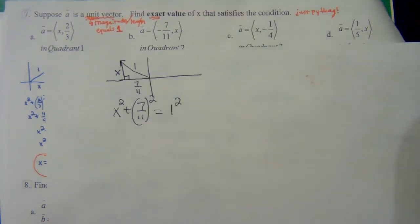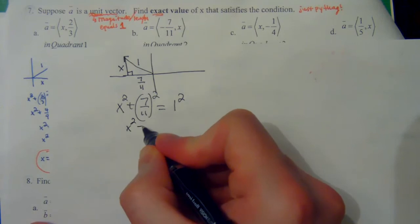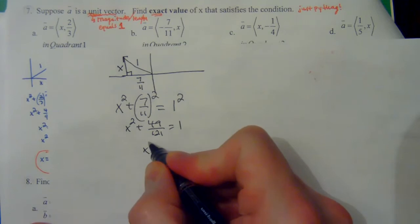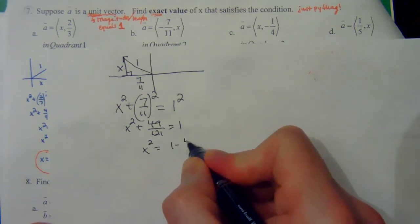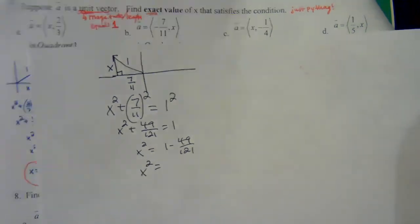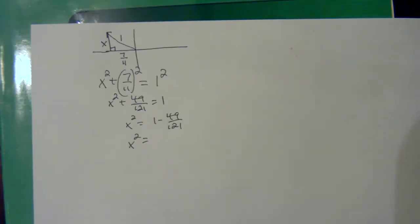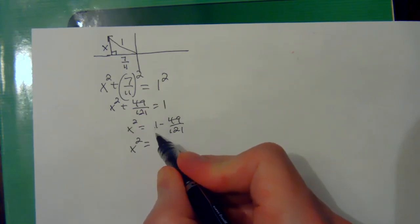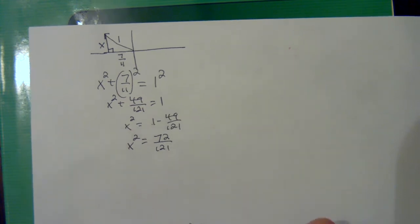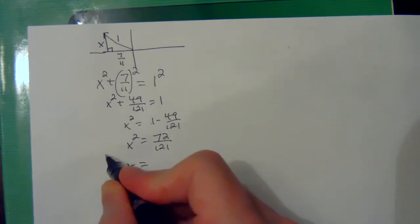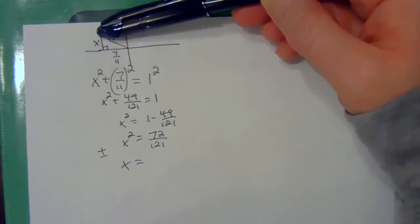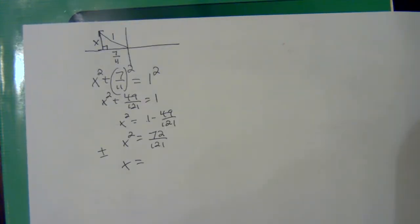Equals the hypotenuse squared, which is one squared. This will give us x squared, this will give us 49 over 121 equals one. You're going to subtract 49 over 121 from each side. That's like 121 over 121 minus 49, that's going to end up being 72 over 121. You're going to square root both sides. When you square root both sides you got to choose a plus or minus, but I'm trying to solve for this y variable and it went up, which means it's going to be positive, so I'm going to choose the positive square root.